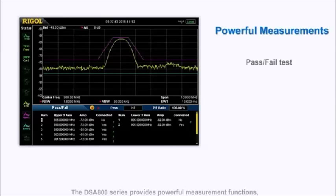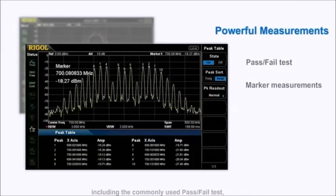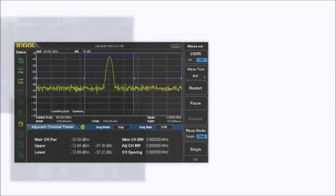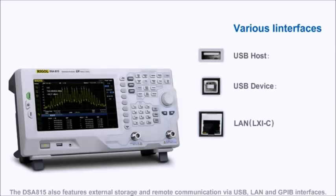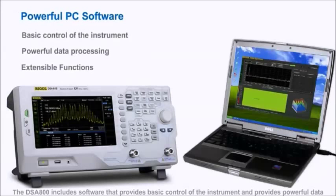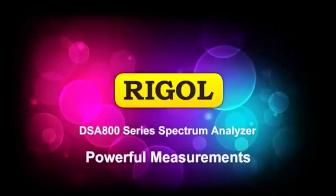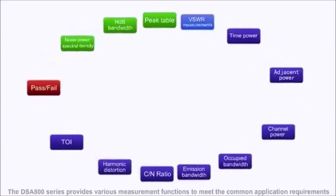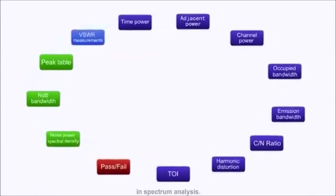The DSA800 series provides powerful measurement functions including the commonly used pass-fail test, marker measurement, and advanced measurement functions like VSWR and quasi-peak. The DSA800 also features external storage and remote communications via USB, LAN, and GPIB interfaces. The DSA800 includes software that provides basic control of the instrument and powerful data processing capabilities. The DSA800 series provides various measurement functions to meet the common application requirements in spectrum analysis.